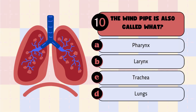Question 10, the last question: The windpipe is also called what? A. Pharynx, B. Larynx, C. Trachea, D. Lungs. Now I'll give you 15 seconds to go through your answers again before we review the real answers.